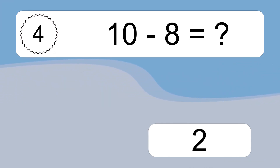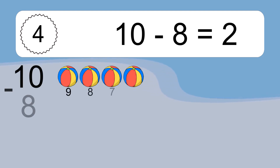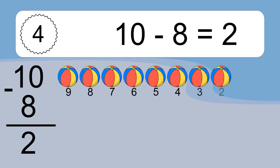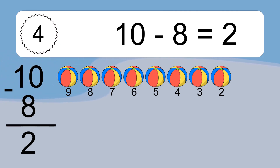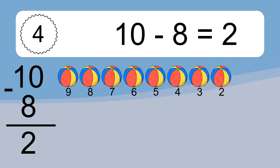10 minus 8 equals 2. Let's count it: 9, 8, 7, 6, 5, 4, 3, 2.